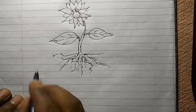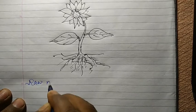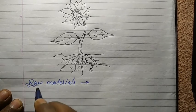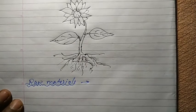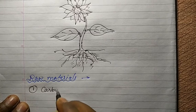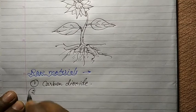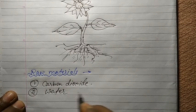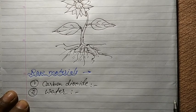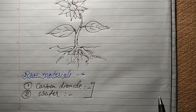What are the raw materials required? The first one is carbon dioxide, and the second one is water. These are the two raw materials which are required for the preparation of food.